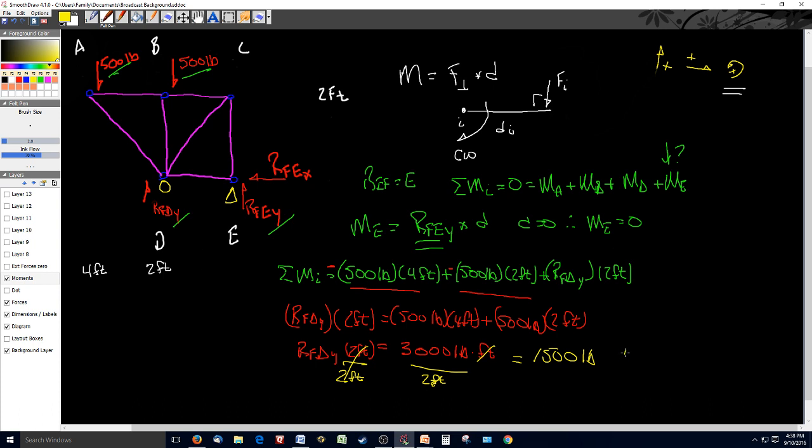Now notice, it's positive, so what that means is it's pushing up. So let me update my diagram. First of all, my initial vector guess was correct, so I don't have to change that, but I'm going to write right in here 1,500 pounds up. So that's it. We found the force RF_DY by summing my moments and assuming the overall body does not rotate.